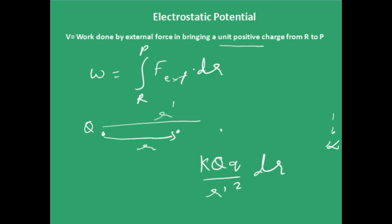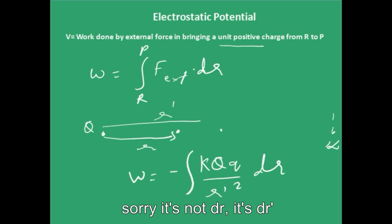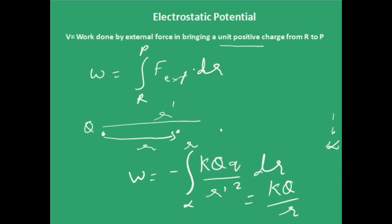The external force would be the negative of this electrical force. So I want to bring it from infinity to this point which is at a distance r — just integrate it. Finally you will get the work done to be kQ divided by r, and since q is 1, this is the electrostatic potential at this point, which is at a distance r from the charge. This is denoted by V. Note that this is the potential due to a point charge; if you are dealing with a system of charges or some other configurations, the potential would be different.